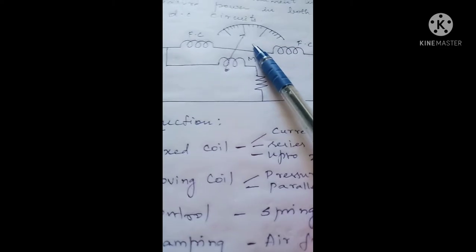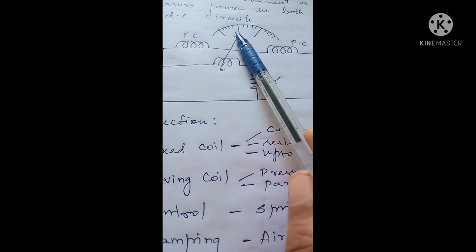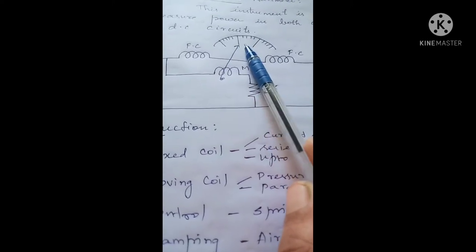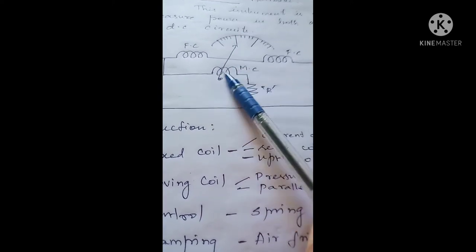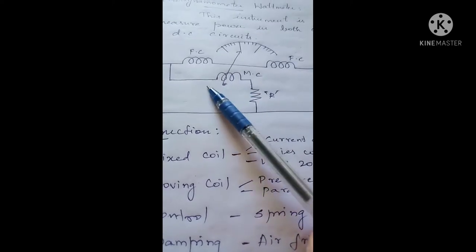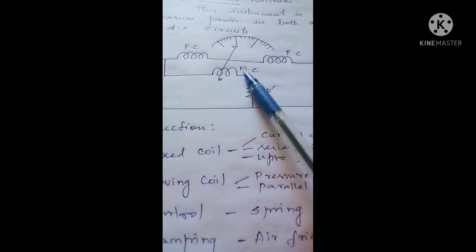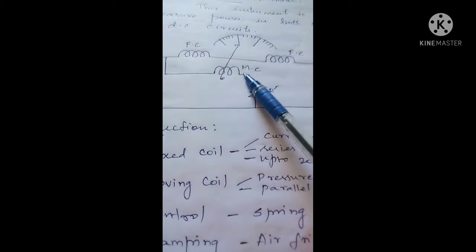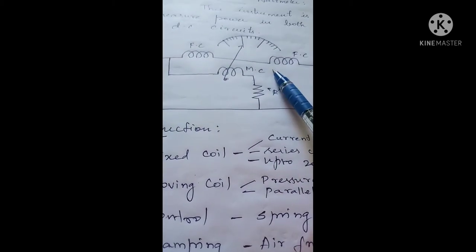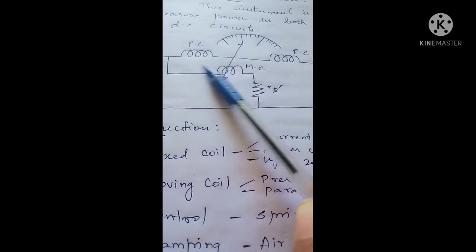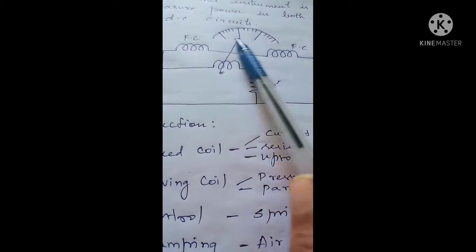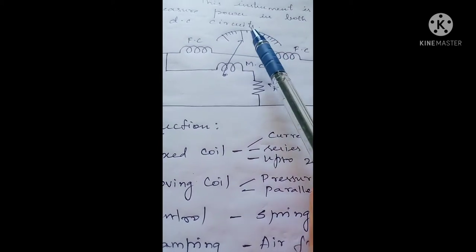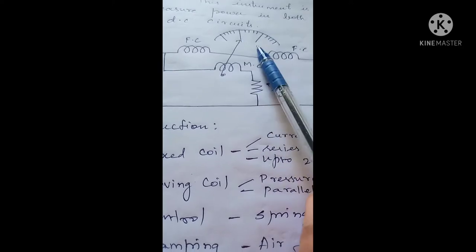This force makes the pointer to deflect, and this deflection will be the representation of the parameter we are measuring — in this case, power. The pointer moves over the scale and the scale representation is calibrated in terms of power.